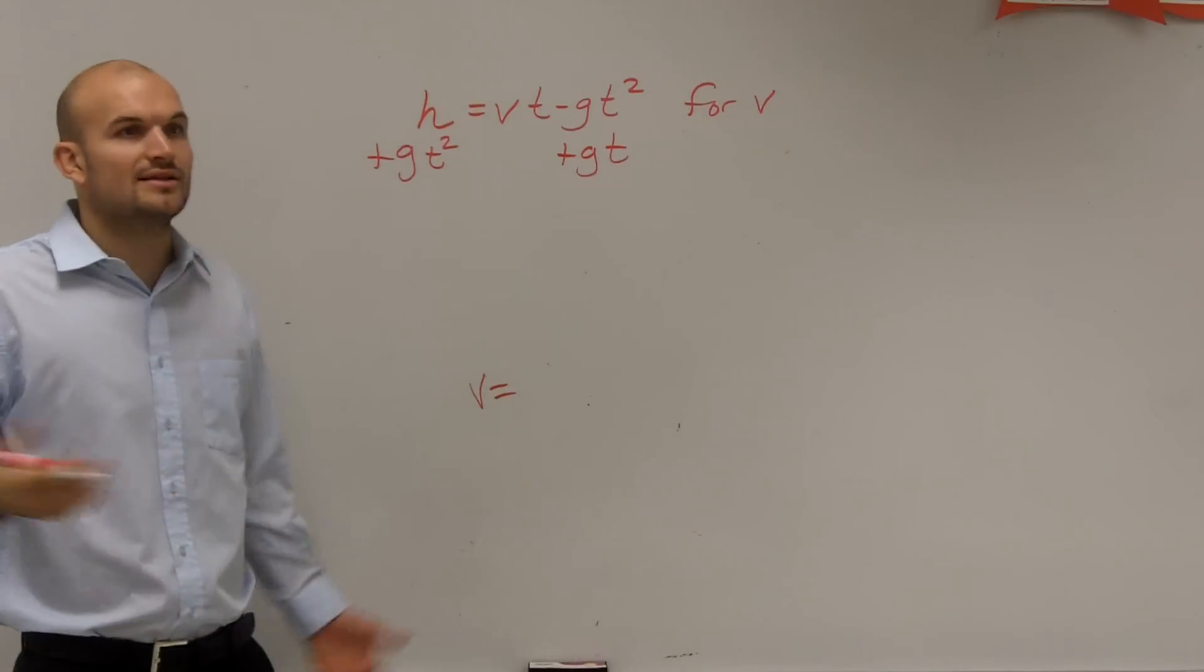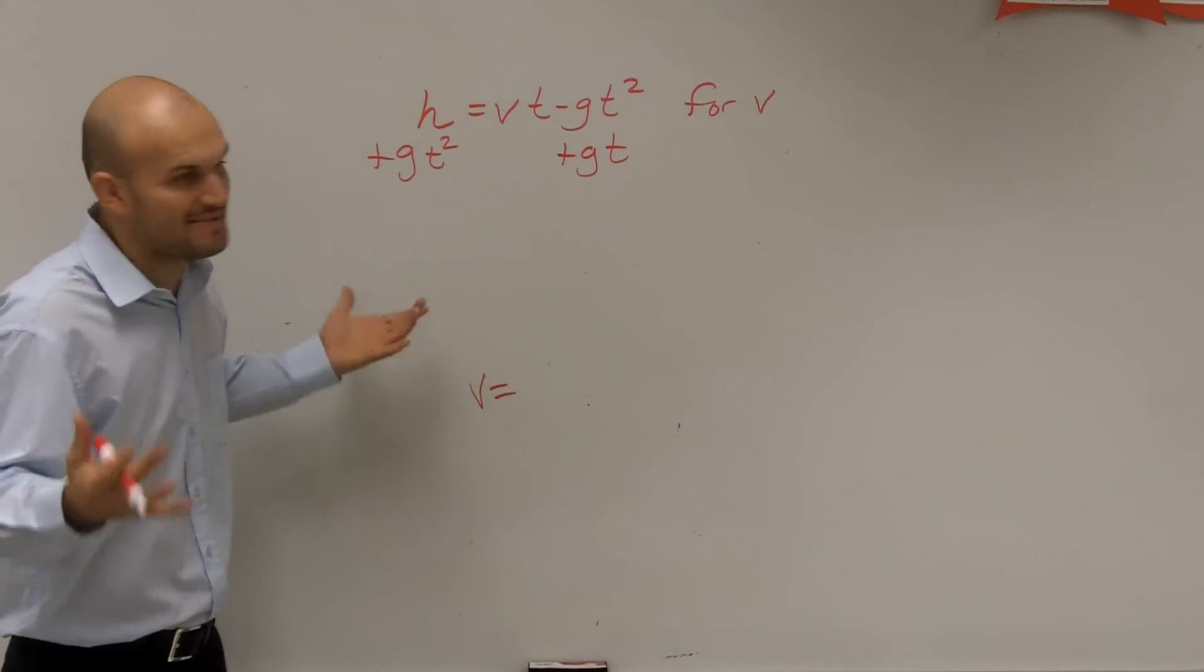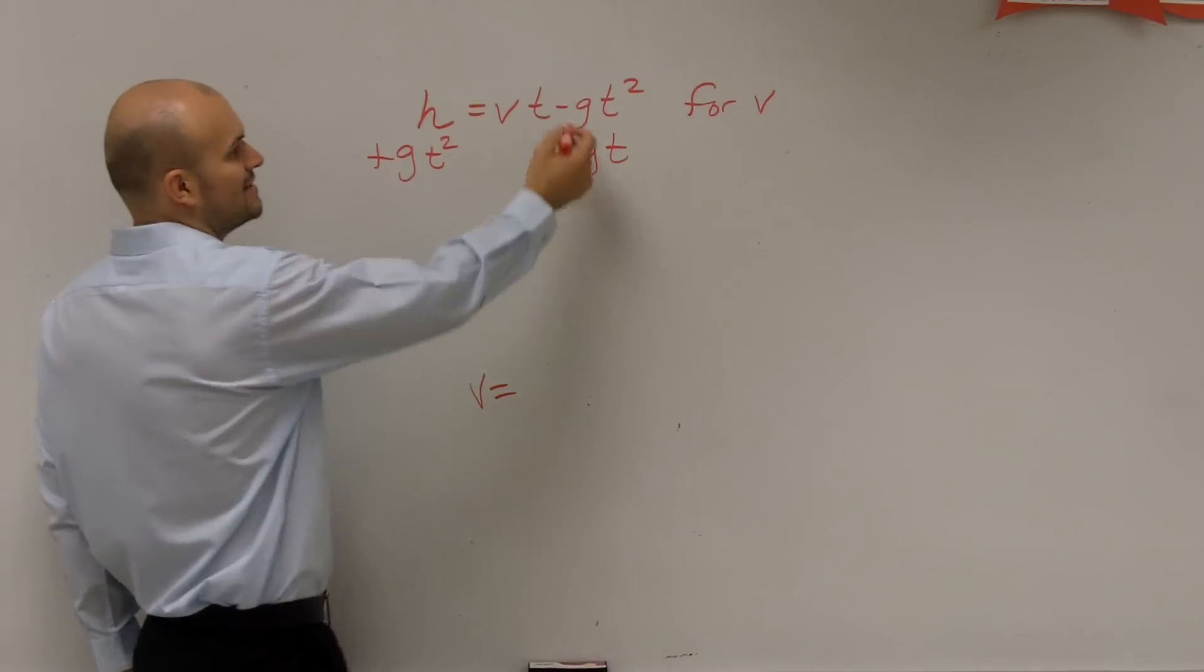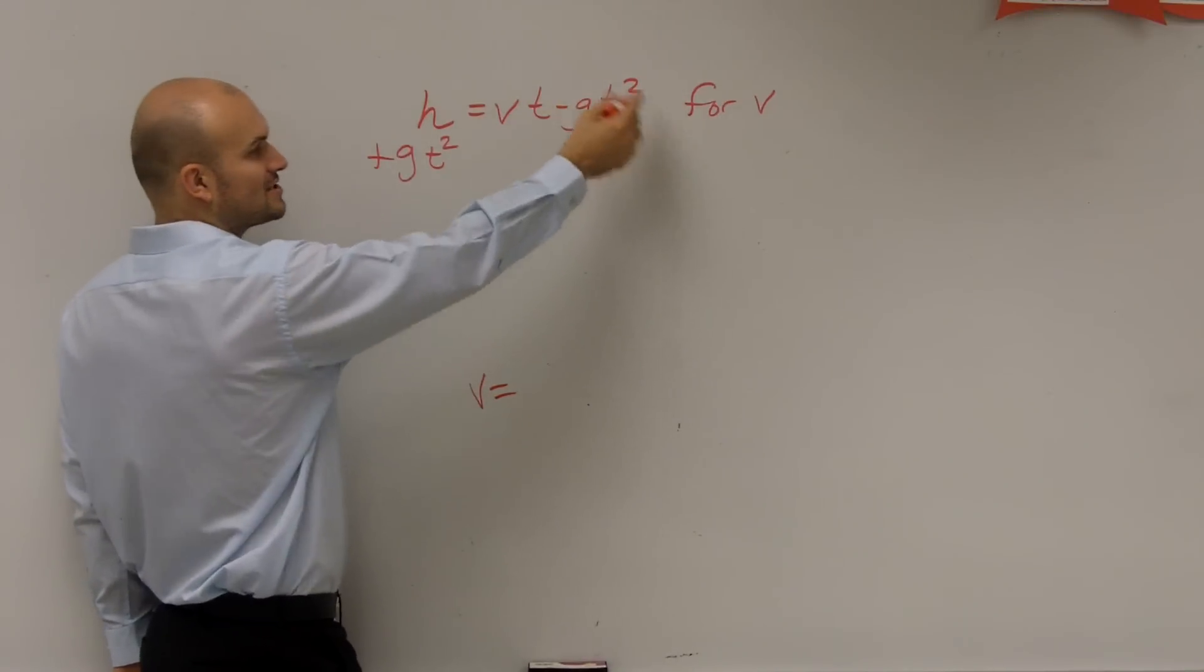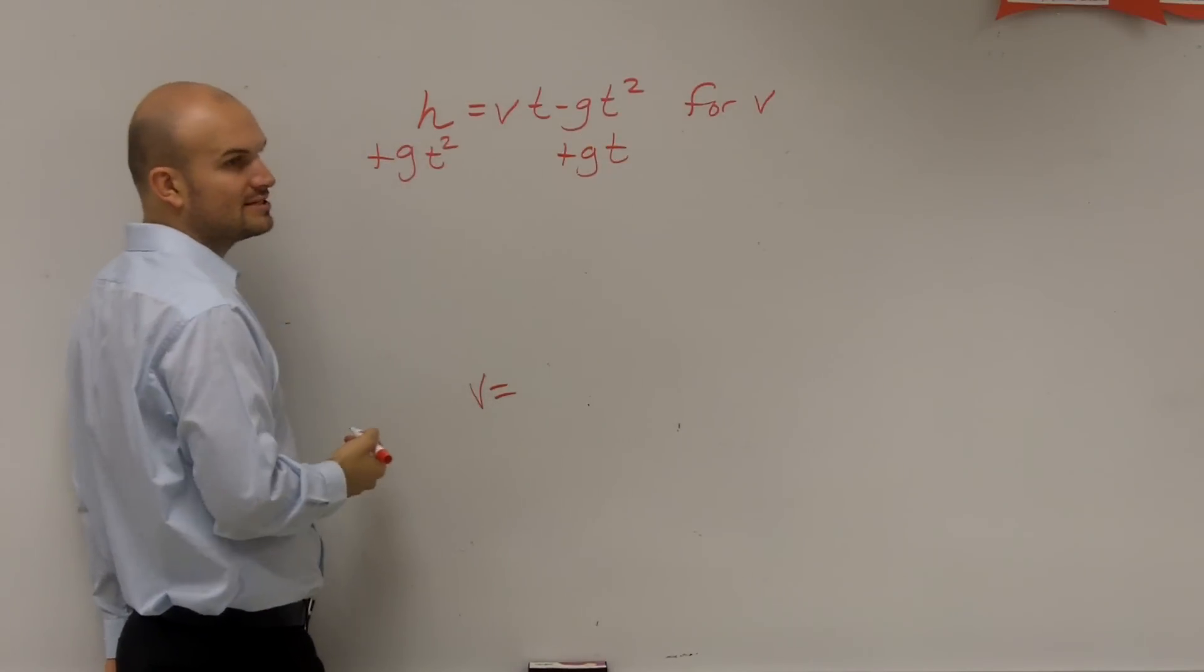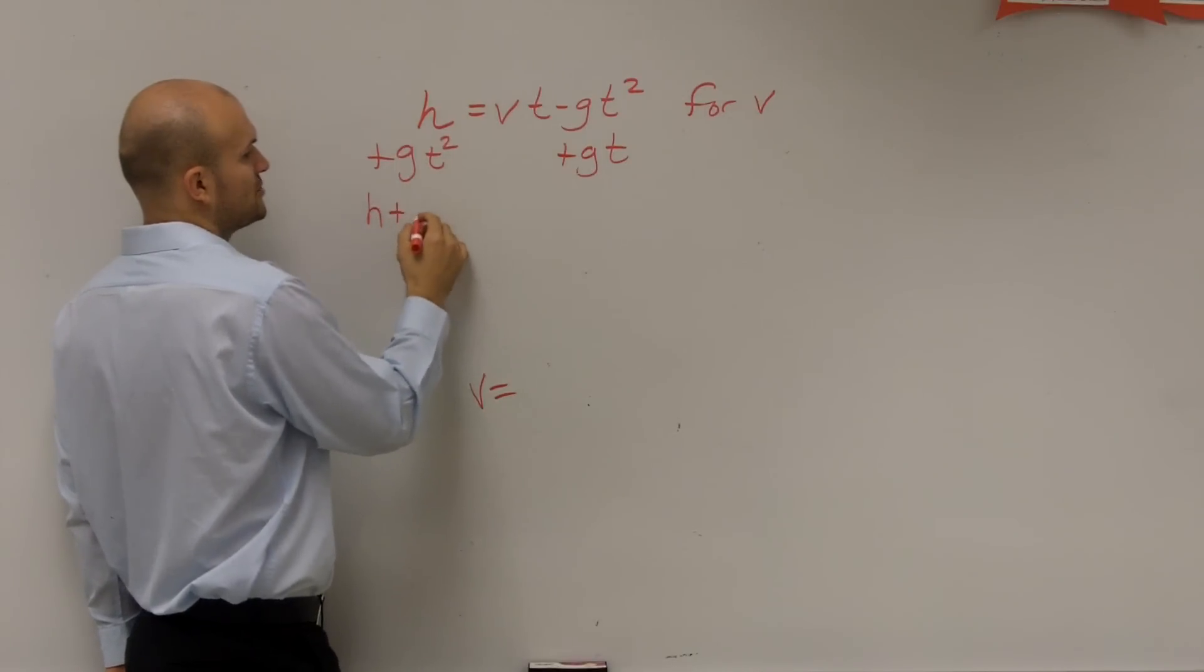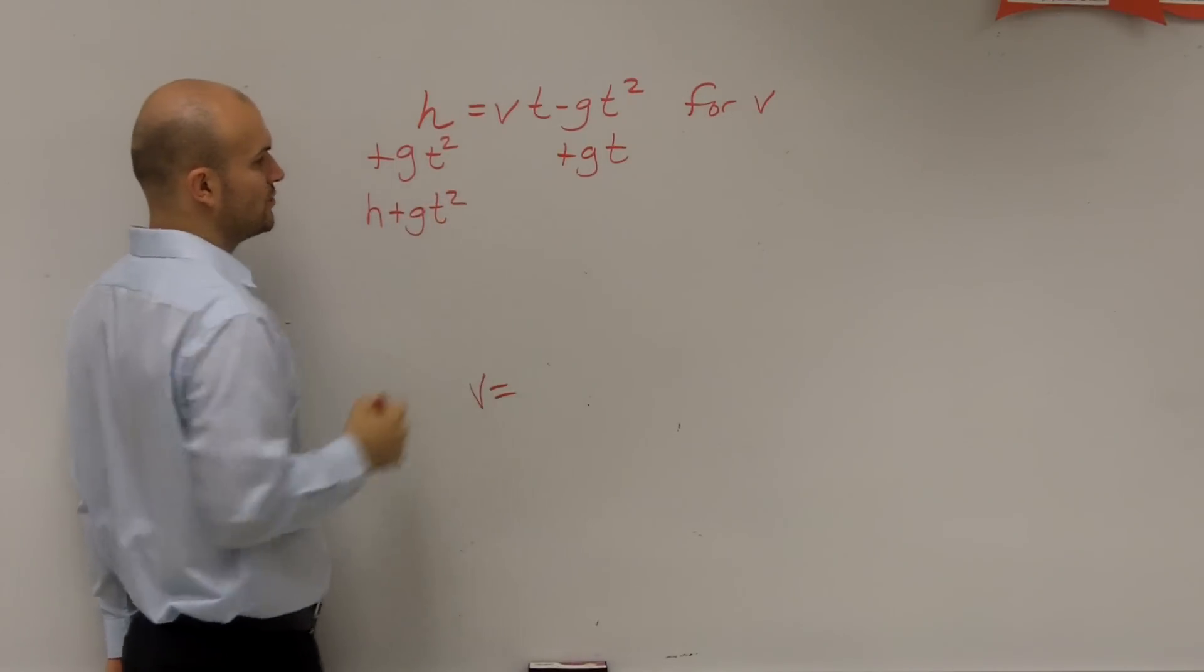And this is where it gets a little confusing, because none of these are like terms. We just want to combine them and have it make sense. But negative g t squared plus g t squared, that's going to equal zero. h plus g times t squared, you can't combine those. So we're just going to leave it as h plus g t squared.